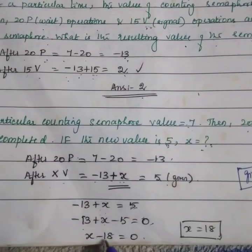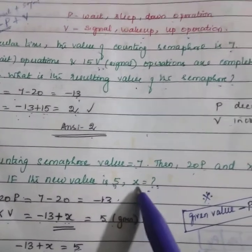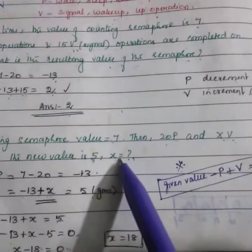So x minus 18 equals 0, x will be 18. The xV value is 18.